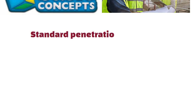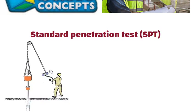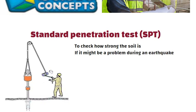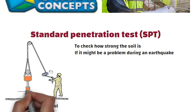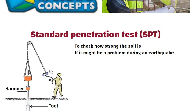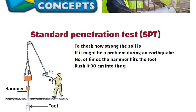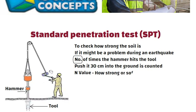Standard Penetration Test, i.e. SPT. The SPT is a test used to check how strong the soil is and if it might be a problem during an earthquake. In this test, a tool is pushed into the ground using a hammer. The number of times the hammer hits the tool to push it 30 cm into the ground is counted. This number is called the N-value and it tells us how strong or soft the soil is.